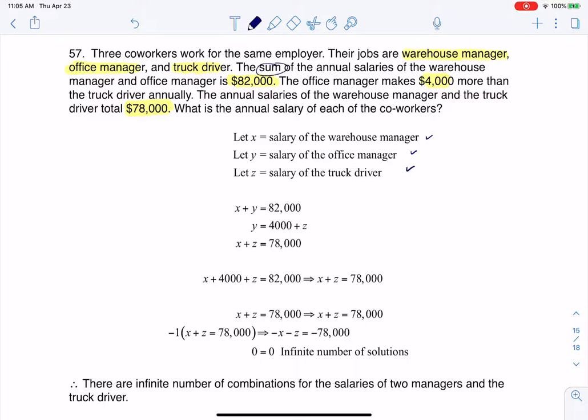So the sum, that means I'm going to add the sum of the salaries of the warehouse manager and the office manager is $82,000. So that means I want to add these two. I want to add x and y together and that is $82,000. So that's where that equation is coming from.